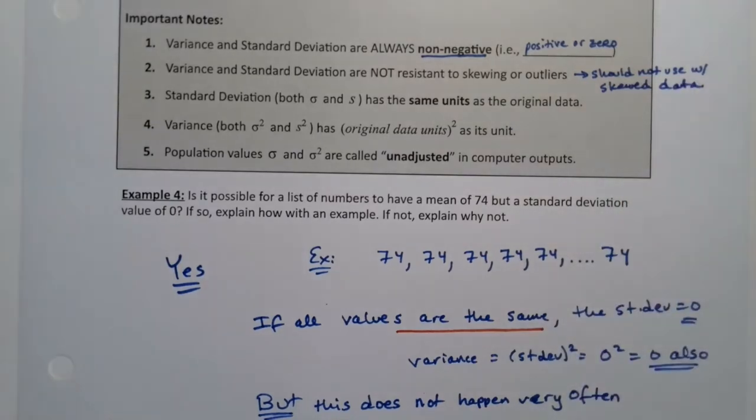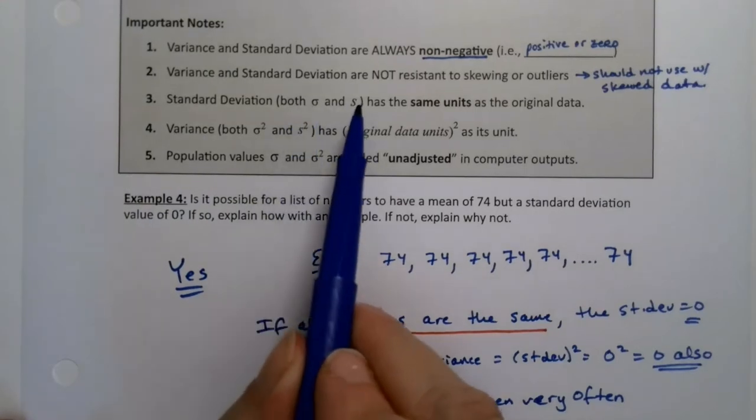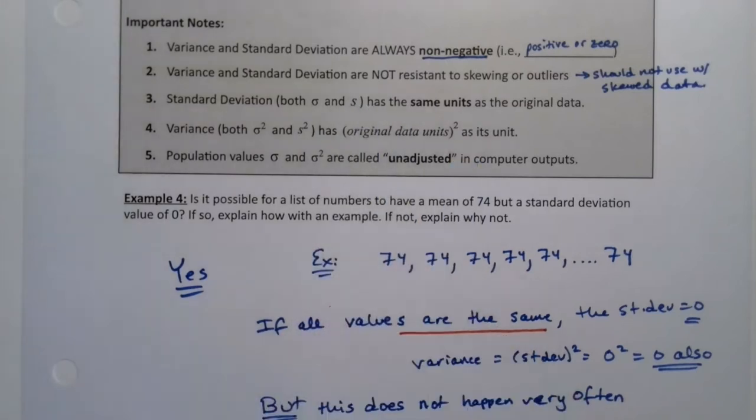The standard deviation has the same units, either one, right? So the sigma, which is the population one, or the S, which is the sample one, has the same units as your original data set. So in our pet example, it was just pets. It could be dollars, inches, feet, you know, whatever.